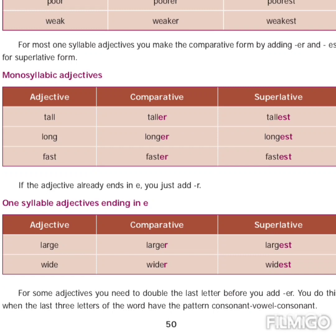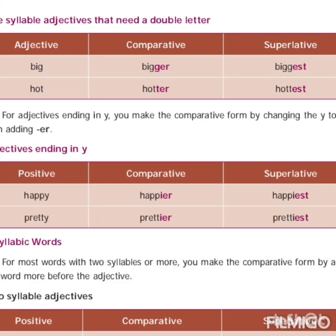For some adjectives you need to double the last letter before adding -er and -est. Do this when the last three letters follow the consonant-vowel-consonant (CVC) pattern. For example: 'big' — b is a consonant, i is a vowel, g is a consonant — so we double the last letter: big → bigger → biggest. Similarly, 'hot' follows the CVC pattern, so we double the t: hot → hotter → hottest.